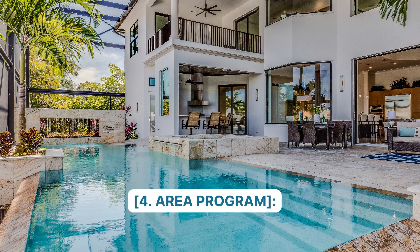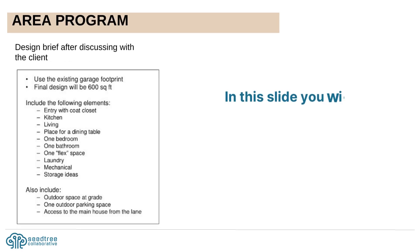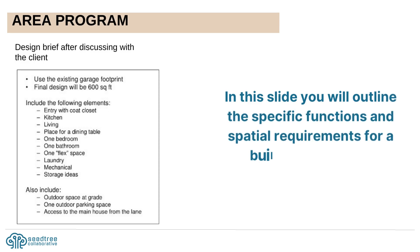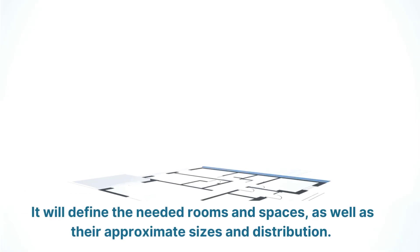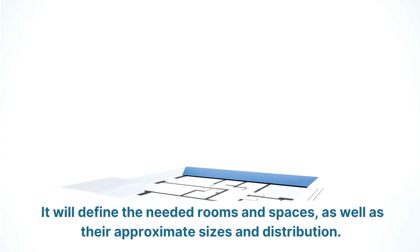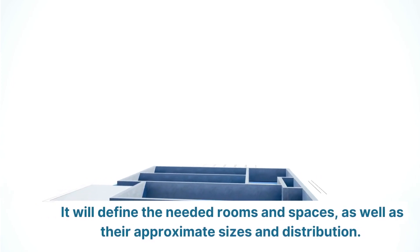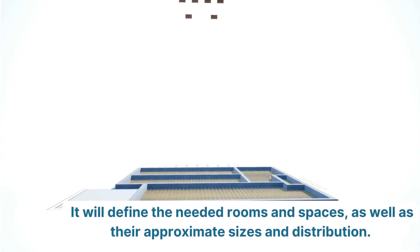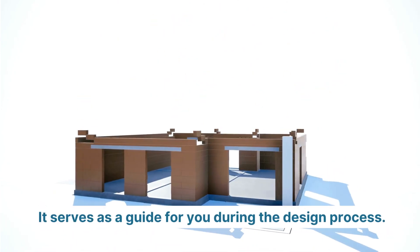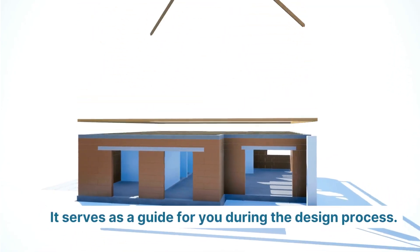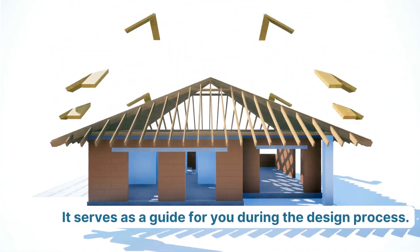Number 4: Area Program. In this slide, you will outline the specific functions and spatial requirements for a building or project. It will define the needed rooms and spaces, as well as their approximate sizes and distribution. It serves as a guide for you during the design process.